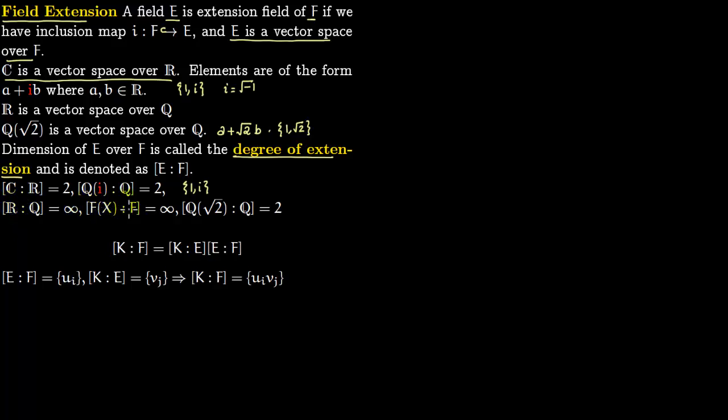[F(x):F] is infinite because here the base you can take as {1, x, x², ...}. [Q(√2):Q] = 2, the base is {1, √2}.